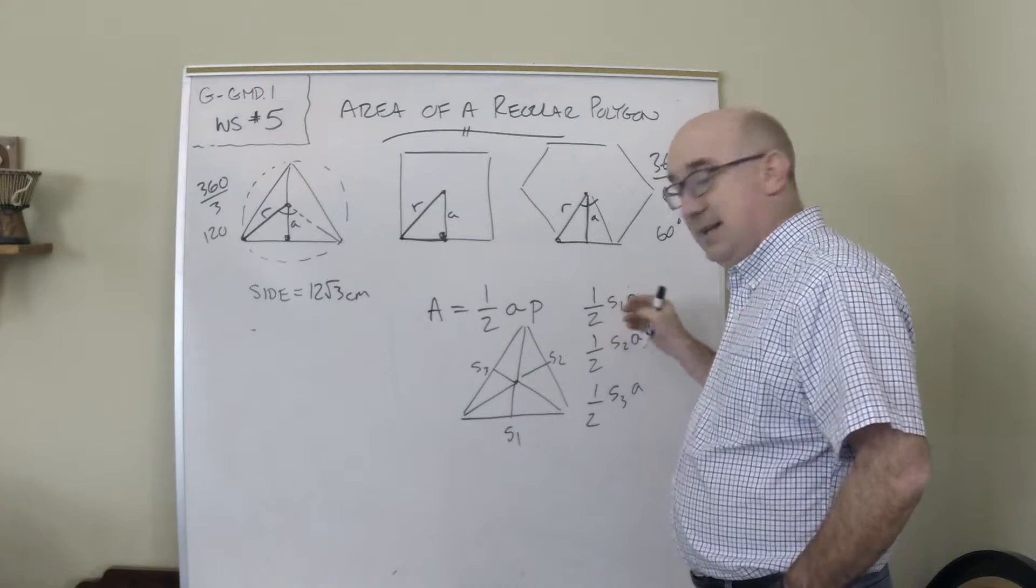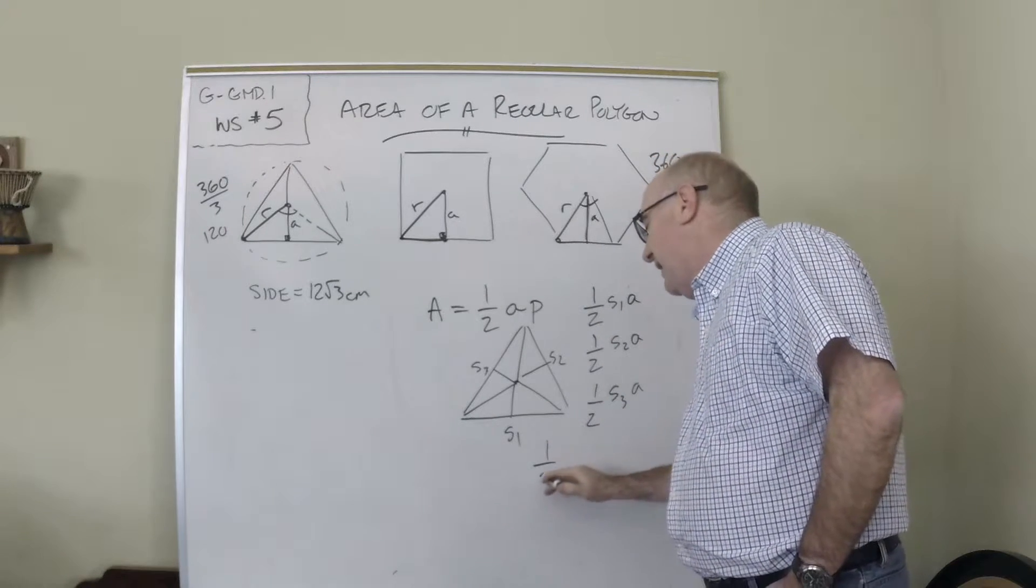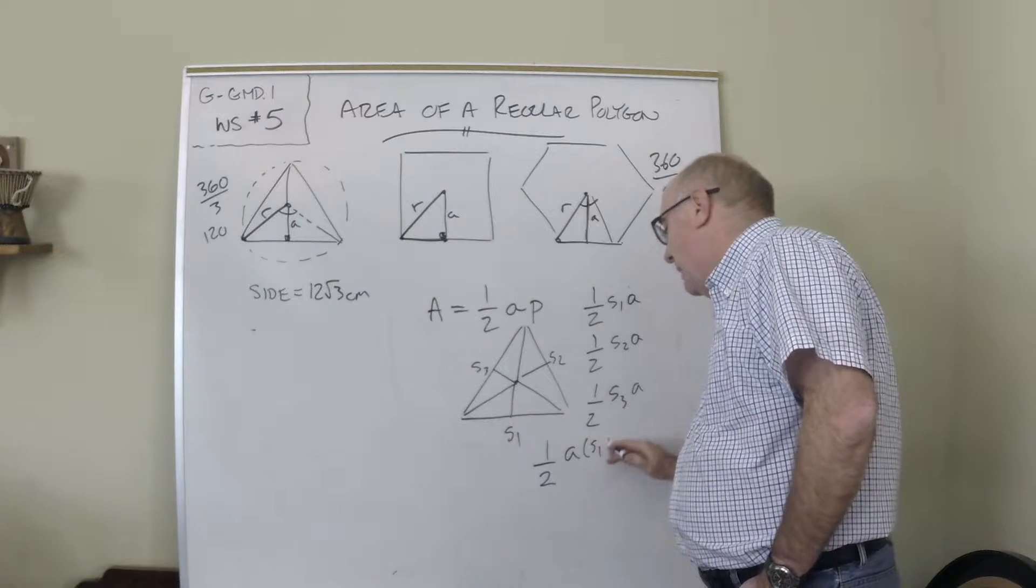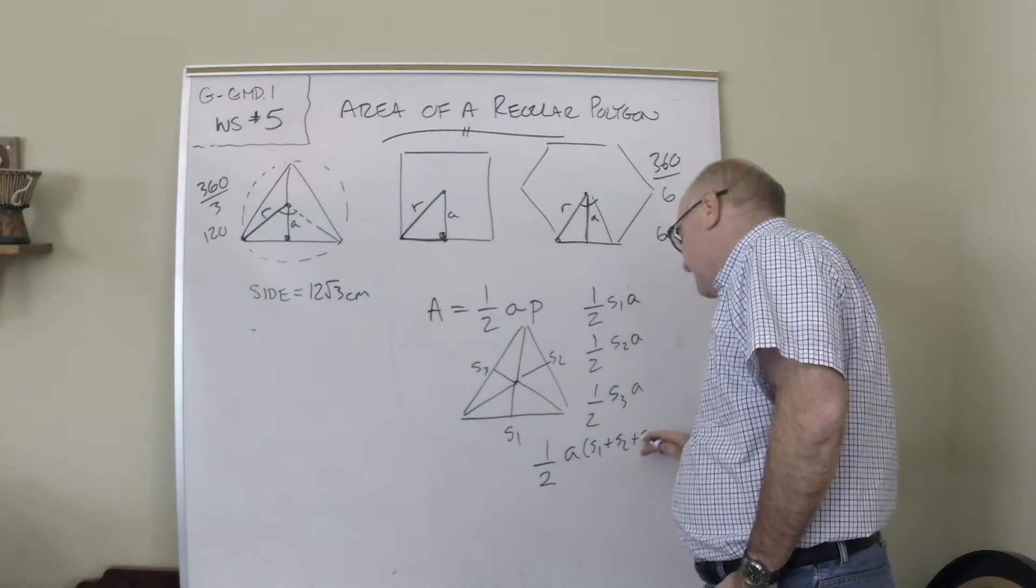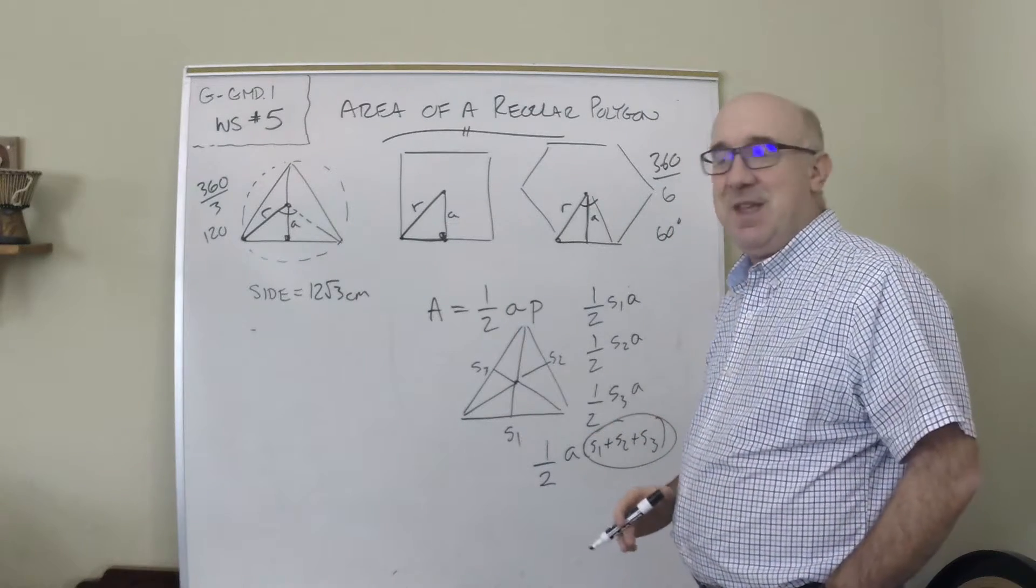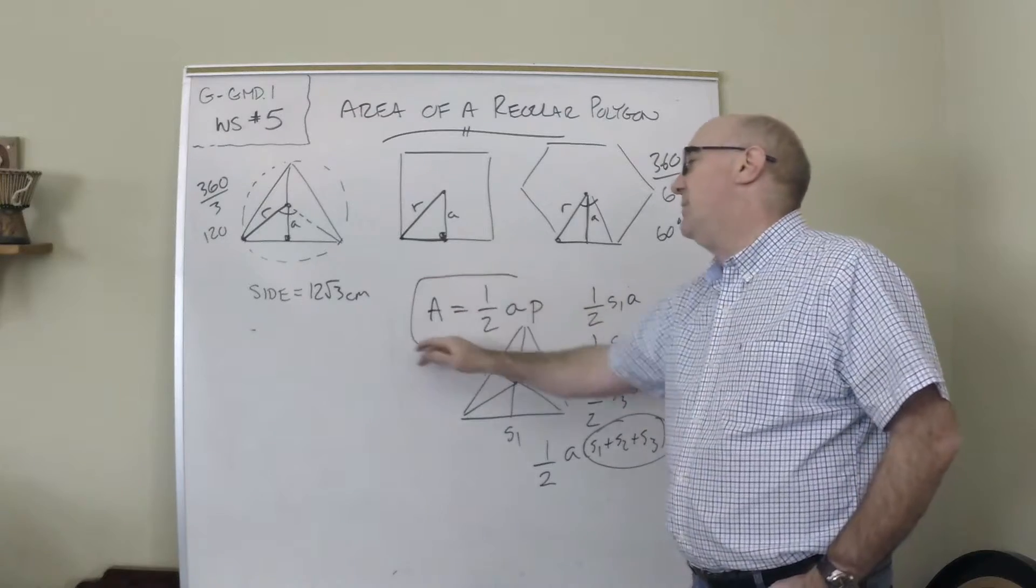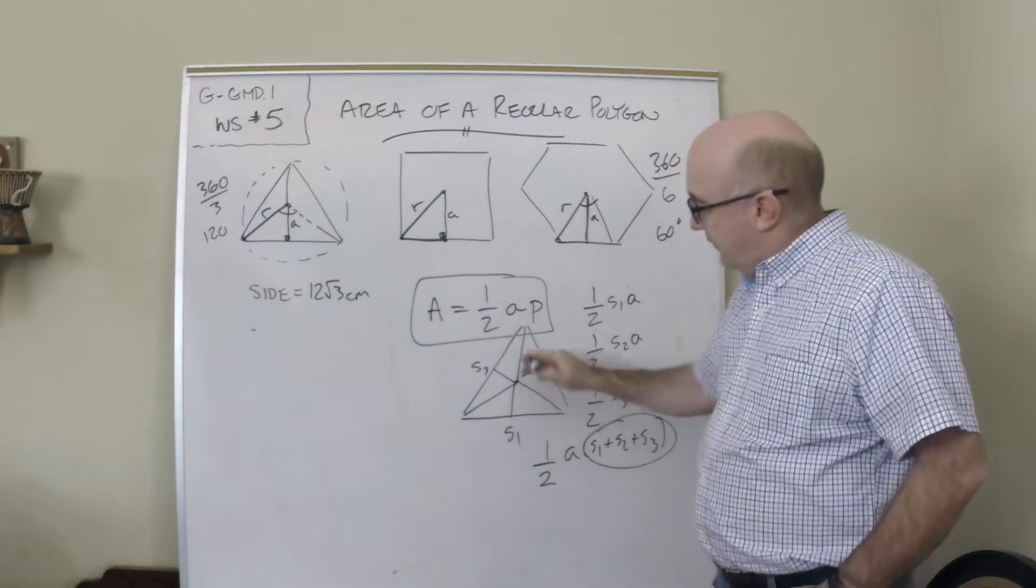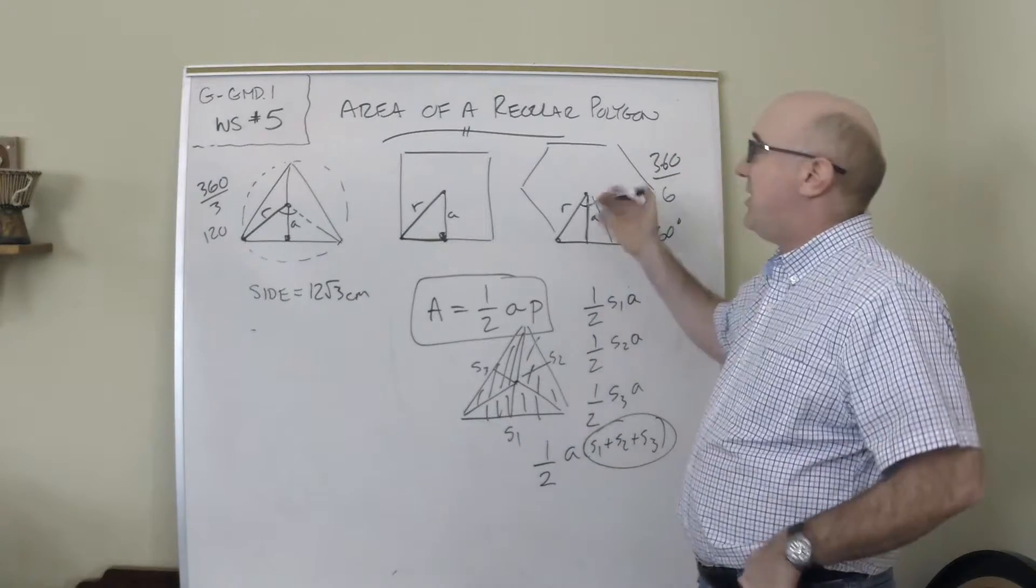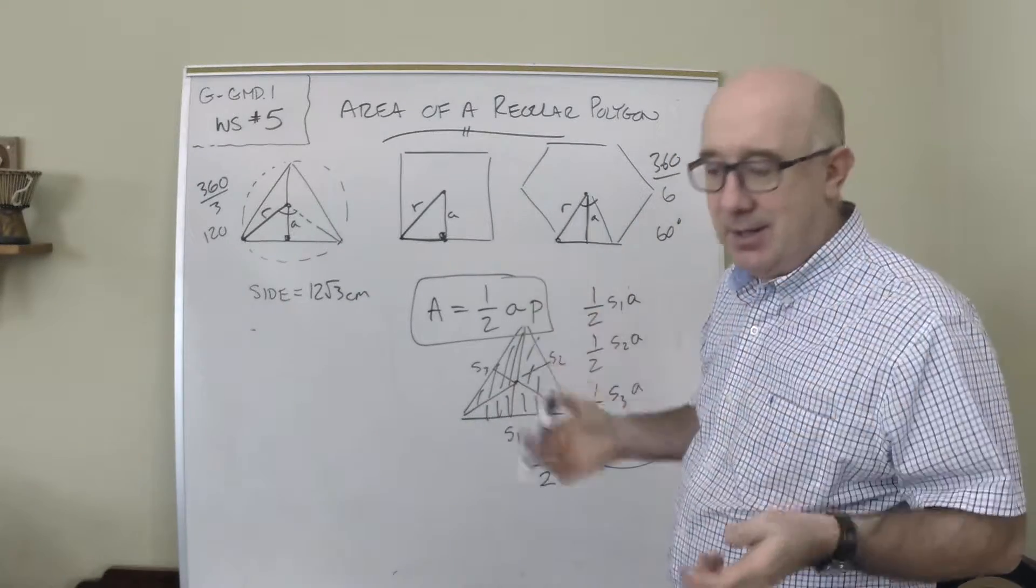They would all be an apothem, and then we notice that they all are one-half of a side times the apothem. This can be simplified as one-half the apothem times side one plus side two plus side three, which is the perimeter. This becomes a simpler way to find the area of all of the triangles in the shape, and that's true for a hexagon, an octagon, a dodecagon, whatever.